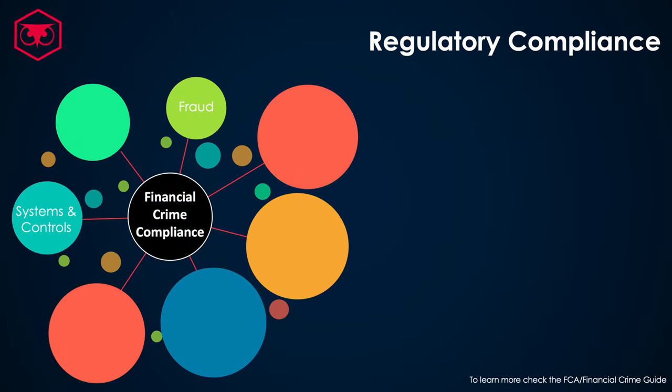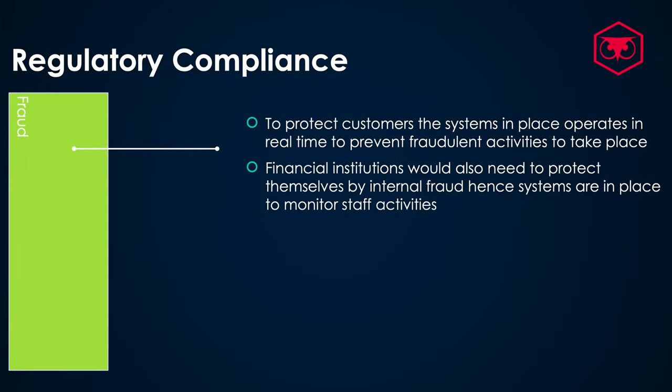Let's talk about the different teams and how they operate to ensure the financial institution is compliant with regulations. Starting with fraud, which is mainly divided into two areas: the systems to identify potential fraud risks, protect customers, and stop transactions for fraud reasons; and then internal fraud protection, where the financial institution maintains controls over their own staff to make sure there are no potential fraud activities being completed internally. These are supported by a number of systems, with procedures in place to demonstrate compliance with fraud prevention requirements.